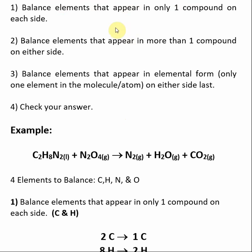The first step is to balance elements that appear in only one compound on either side of the reaction. Then balance elements that appear in more than one compound on either side of the reaction. Then balance elements that appear in their elemental form — meaning a molecule or atom with just one element inside of it — and we want to do this last. Then, as always, check your answer.